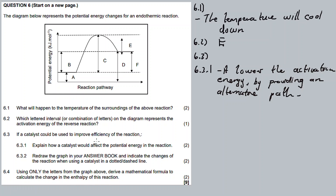With a catalyst, the activation energy is lowered. Redraw this graph in your answer book and indicate the changes when a catalyst is used, drawing it with a dotted line or a dashed line.